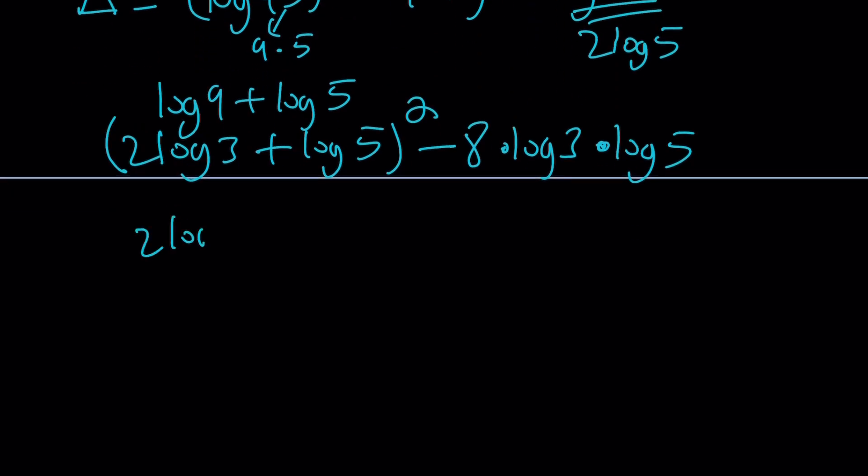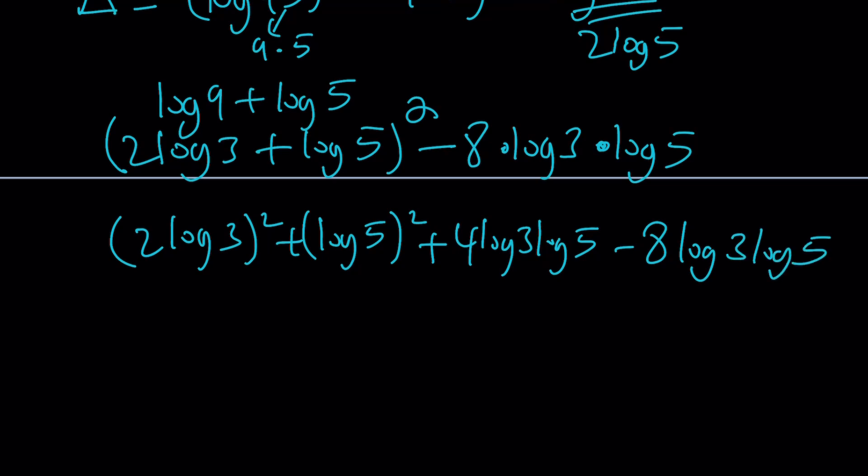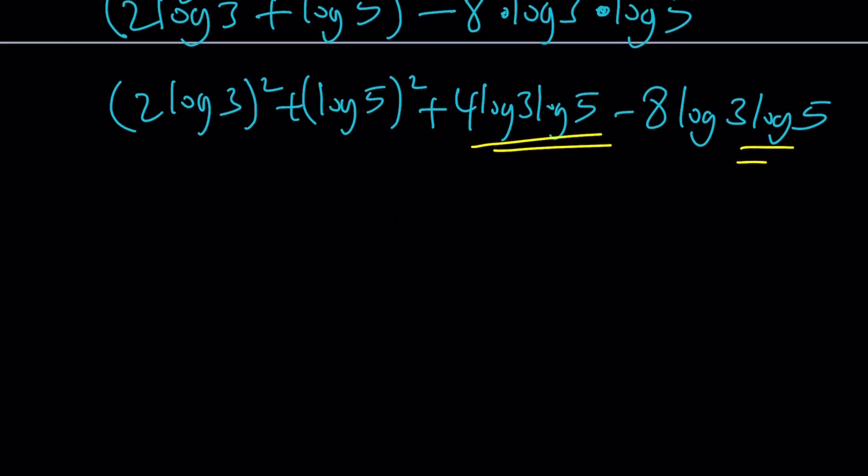We get 2 log 3 squared plus log 5 squared from A plus B quantity squared plus 2AB for log 3 log 5. And then from it, I'm going to subtract 8 log 3 log 5. Does that look familiar? Take a look. So these are like terms. They like each other. Awesome. So we're going to go ahead and subtract it.